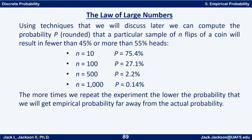Using techniques discussed later, we can compute the probability that a sample of n coin flips will result in fewer than 45 percent or more than 55 percent heads. With 10 flips there's a 75.4 percent chance of getting something outside that range. With 100 flips it drops to 27 percent. With 500 flips it drops to about 2 percent, and with 1,000 flips it's about 0.14 percent. The more times we repeat the experiment, the lower the probability of getting an empirical probability very far from the actual probability, so our experimental probability becomes a pretty good approximation of the real probability.